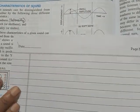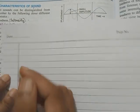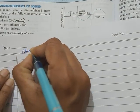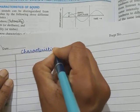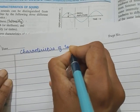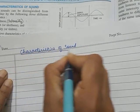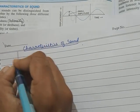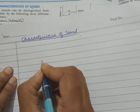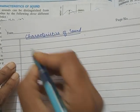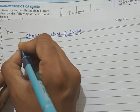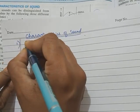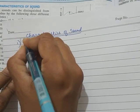Now I want you to draw the diagram along with me. Please put the heading 'Characteristics of Sound.' We're going to draw the graph - first we're going to draw a soft sound and a loud sound, so label it 'Loudness.'